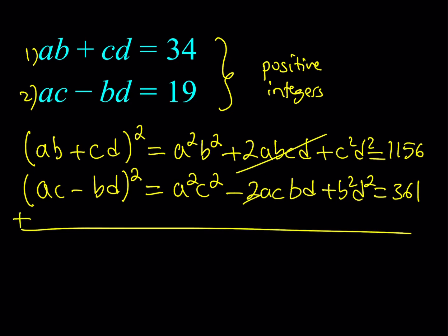Now, the reason why we do this is because when you add these two squares, the terms in the middle are going to cancel out. We're going to get something real nice. If you add these two things, A²B² plus C²D² plus A²C² plus B²D² equals 1156 plus 361, which equals 1517.